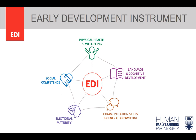The five EDI scales are: physical health and well-being, language and cognitive development, communication skills and general knowledge, emotional maturity, and social competence. A copy of the EDI questionnaire can be found on our website if you're interested. Completed EDI questionnaires are grouped together to give a snapshot of how children are doing at the school, school district, neighborhood, and provincial level. It measures the rates of developmental vulnerability of children at a population level.